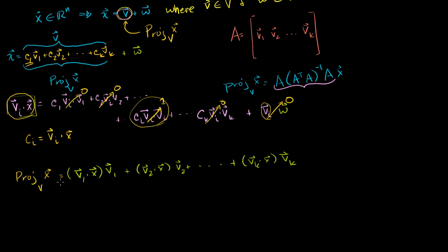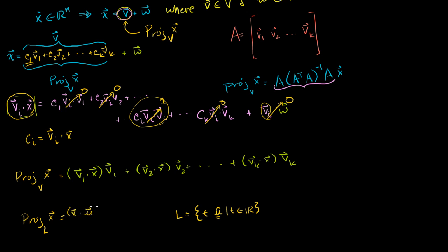Recall what we did when taking the projection of x onto some line, where L is the span of some unit vector u with length 1. The projection onto a line simplified to the formula (x dot u) times the vector u. Notice that when dealing with an orthonormal basis for a subspace, taking the projection of any vector in Rn onto that subspace is essentially just finding the projection onto the line spanned by each of these vectors — (x dot V1) times V1, (x dot V2) times V2, and so on. This is a much simpler way of finding a projection than going through A times (A transpose A) inverse times A transpose times x.